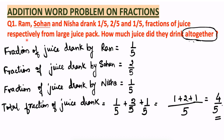One more example: Ram, Sohan, and Anishat drank 1 by 5, 2 by 5, and 1 by 5 fractions of juice respectively from a large juice pack. How much juice did they drink altogether? We add all the numerators: 1 plus 2 plus 1 equals 4 by 5. So the answer is 4 by 5 liters of juice they all drank together.